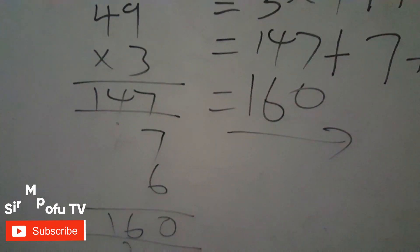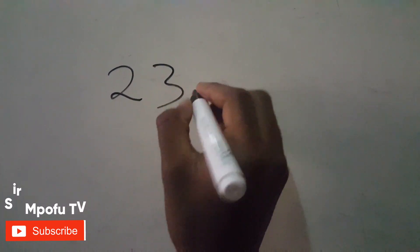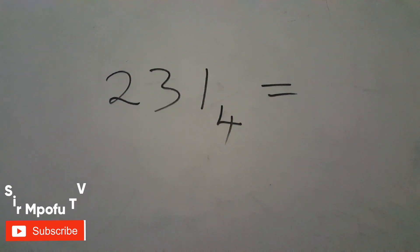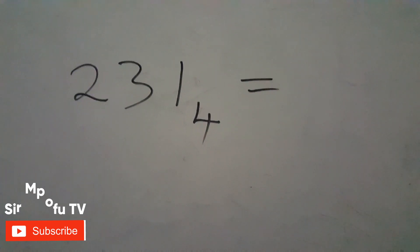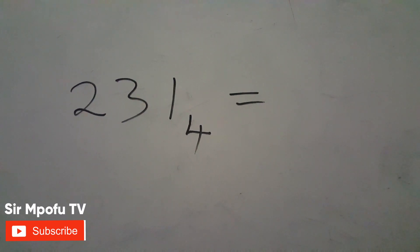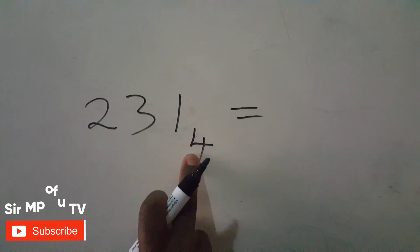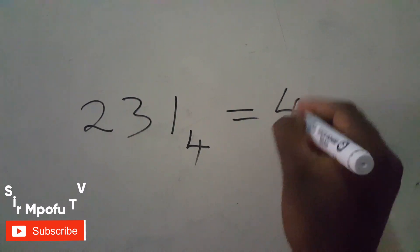I'm going to give you the last example. There are always many methods in mathematics, but there's always the easiest and fastest. Let's say you have 2314 base 4 and you want to change it to base 10. Using the shortest method: four times two is eight, plus three is eleven; eleven times four is 44, plus one is 45. So the answer is 45.